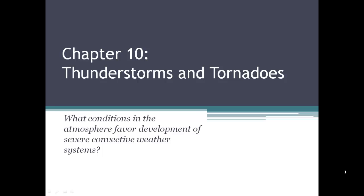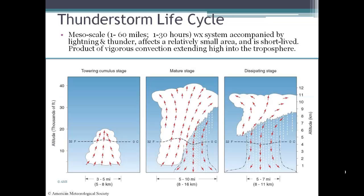Chapter 10 is about thunderstorms and tornadoes. The driving question is: what conditions in the atmosphere favor development of severe convective weather systems?